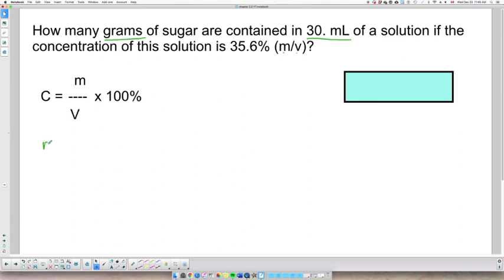So if I list my information, my mass of solute is what I am looking for. Volume of solution, 30 milliliters. I don't need to put the dot now because I know that the zero is significant.